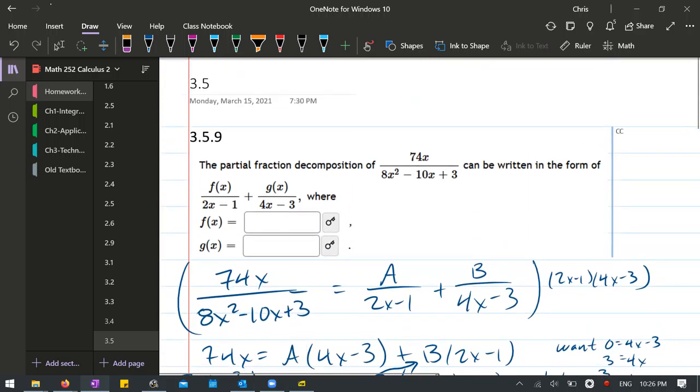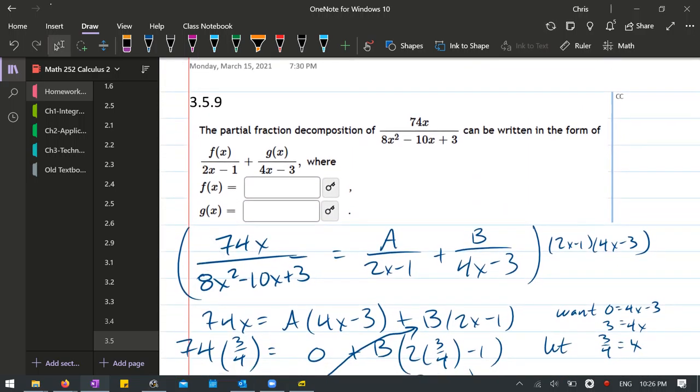And then that will be the f... what did I call it? f is the A. The first one's the A. The g is going to be the B value.